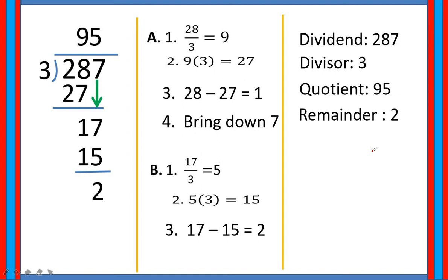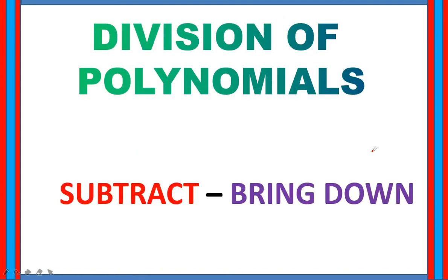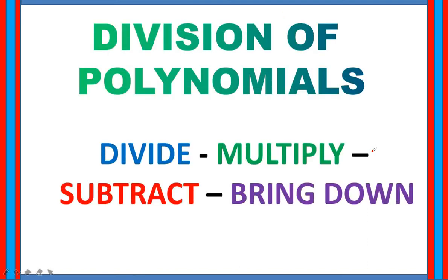Now, how are we going to check whether our answer is correct? We are going to multiply the quotient and the divisor and then add the remainder — it should be equal to the given dividend. We are going to use the same process in dividing polynomials, that is: divide, multiply, subtract, and bring down.